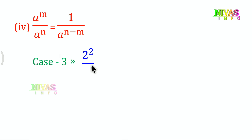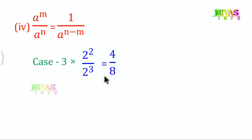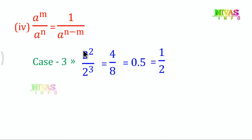For example, 2^2 divided by 2^3. Here the denominator has the bigger exponent. When the denominator exponent is bigger, the result is 1 divided by a^(n-m). So 2^2 / 2^3 gives 1 by 2^(3-2), which is 1 by 2^1.